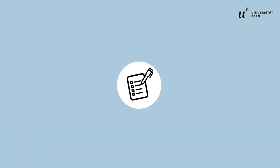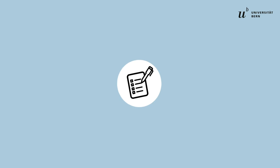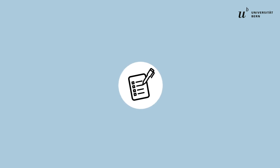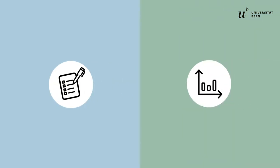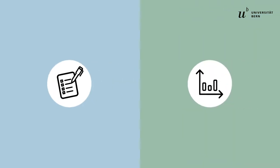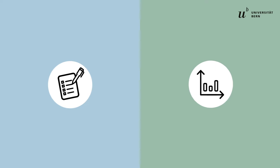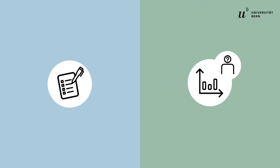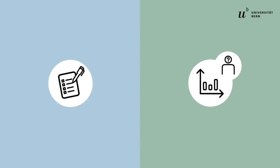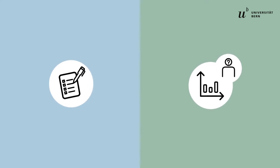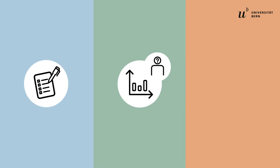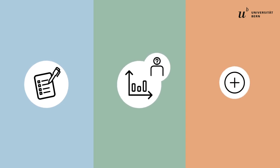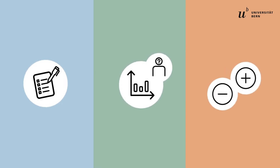This is done, for example, with questionnaires where you share your opinion of your courses. The results are processed by the evaluation office and remain anonymous at all times. They show the University in which courses students learn particularly well or frequently have trouble.